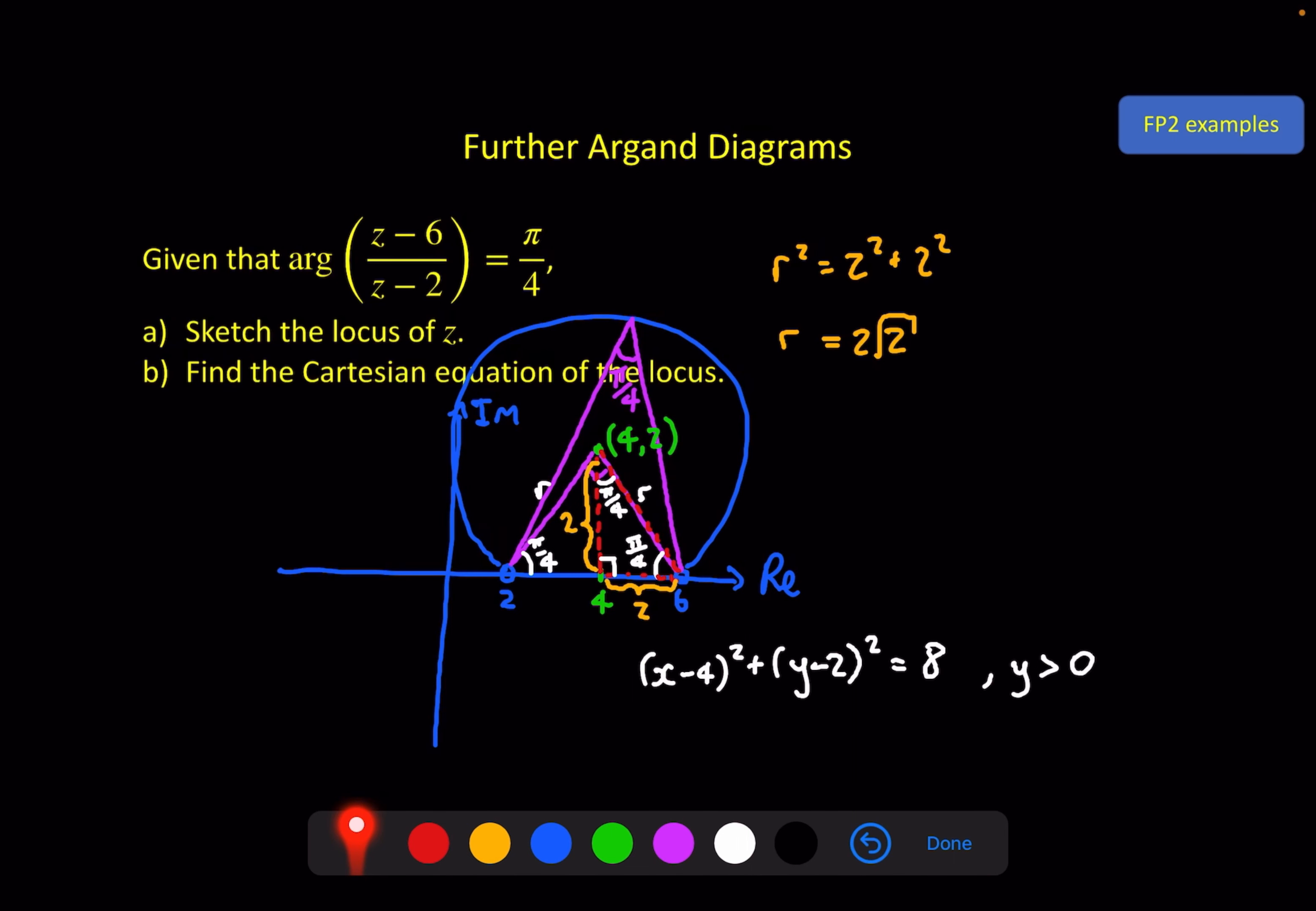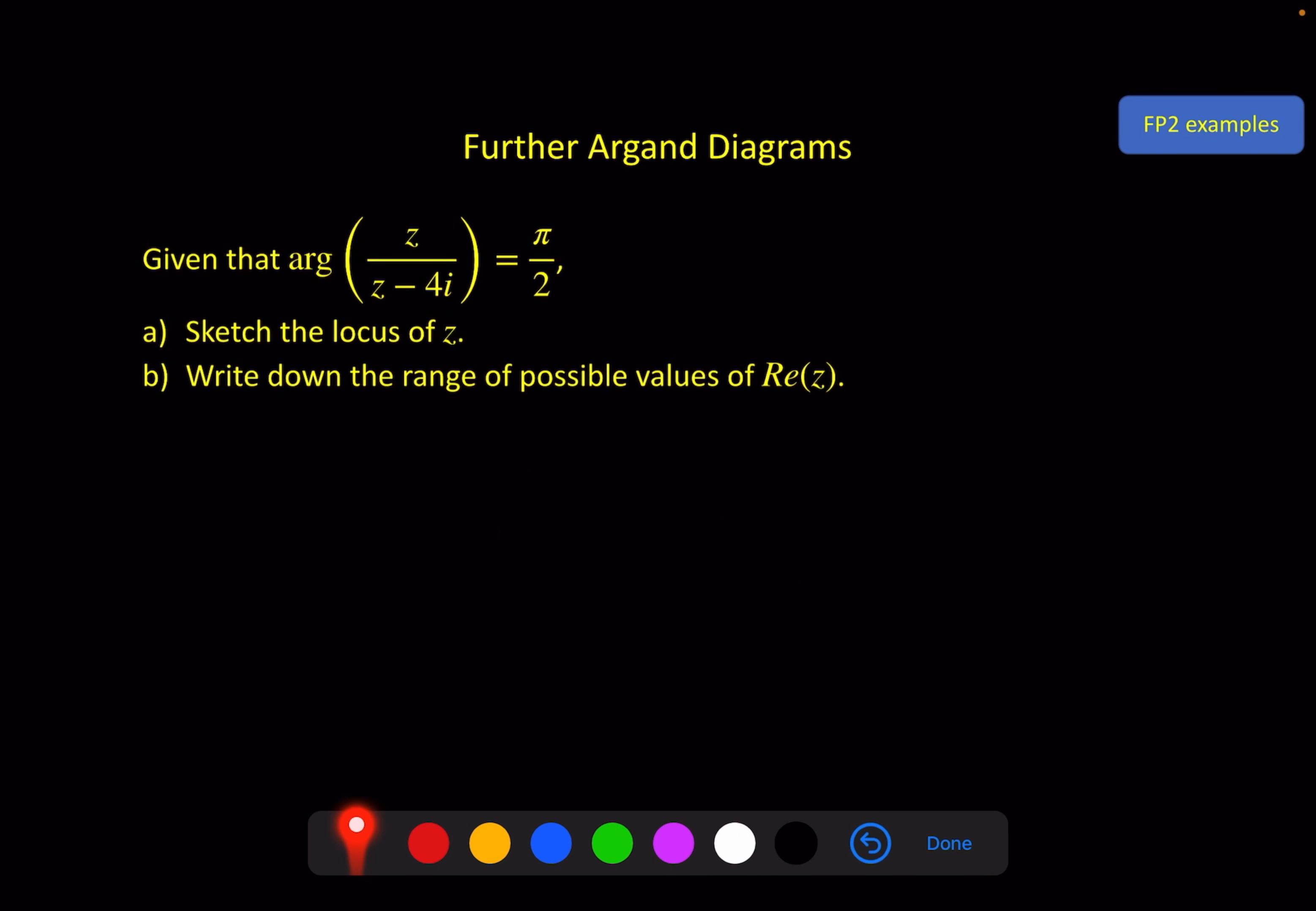Final example is another arc. Given that the argument of z/(z - 4i) is π/2, now immediately you should realize that's a 90 degree angle. That's important. Sketch the locus of z. This question is a little bit unusual in that we don't appear to have a z₁. z - z₁ here is just z. But remember, of course, z₁ can be 0. So this is like saying z - 0. So z₁ is here. And z₂ is 4i here. Now, to help us draw this, we should remember that a 90 degree angle in an arc always comes from the diameter. So from 0 to 4, this is the diameter of our circle. And we need to go anticlockwise from z₁ to z₂. So it starts here and goes here. Like so.